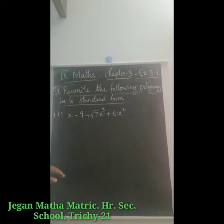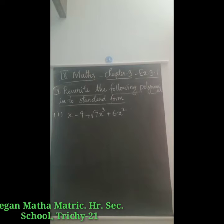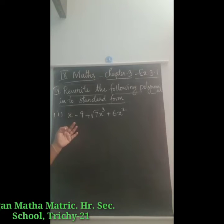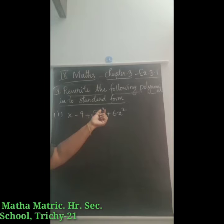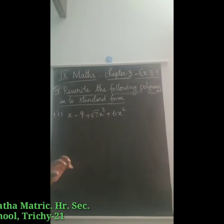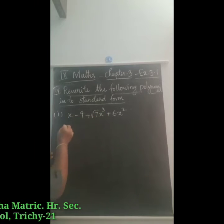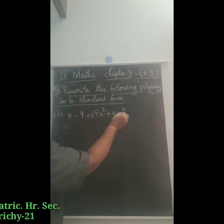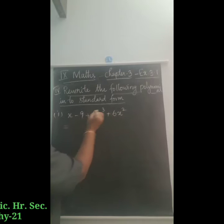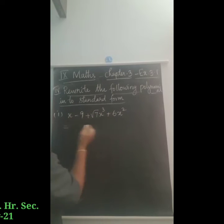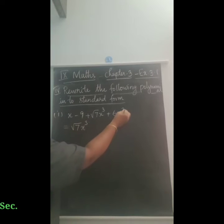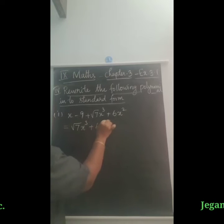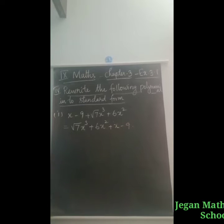Rewrite the following polynomials into standard form. Standard form means we arrange the terms according to descending powers of the variable. First one: x minus 9 plus root 7 x cubed plus 6x squared. Arranged in descending order: root 7 x cubed plus 6x squared plus x minus 9.